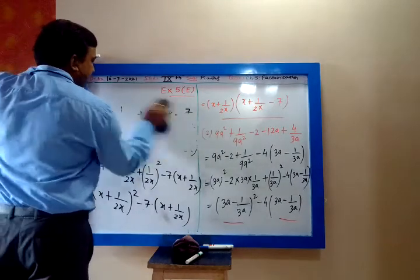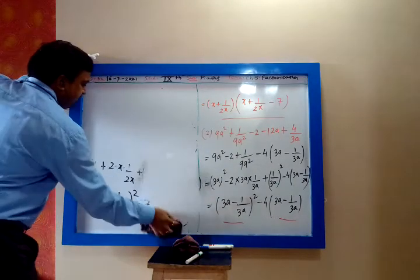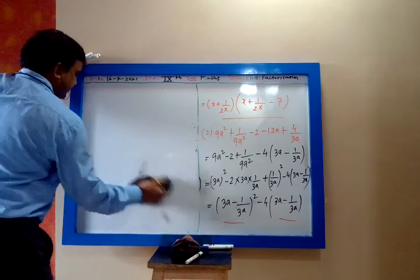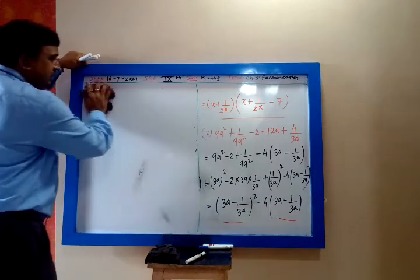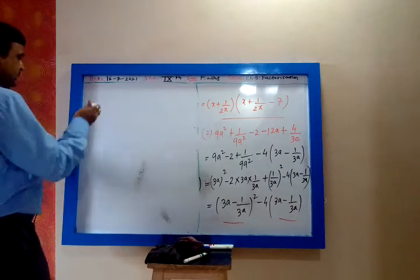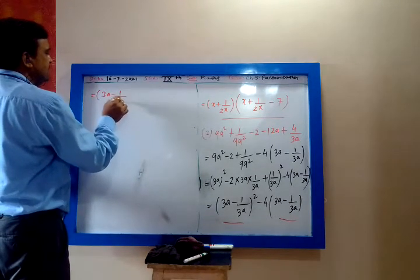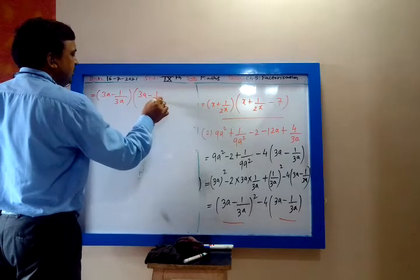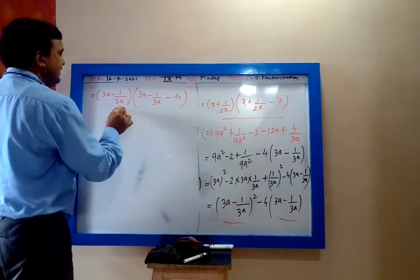(3a − 1/(3a)) is common, so we take (3a − 1/(3a)) common. What is left is (3a − 1/(3a)) minus 4, because it is a perfect square. And this is the answer.